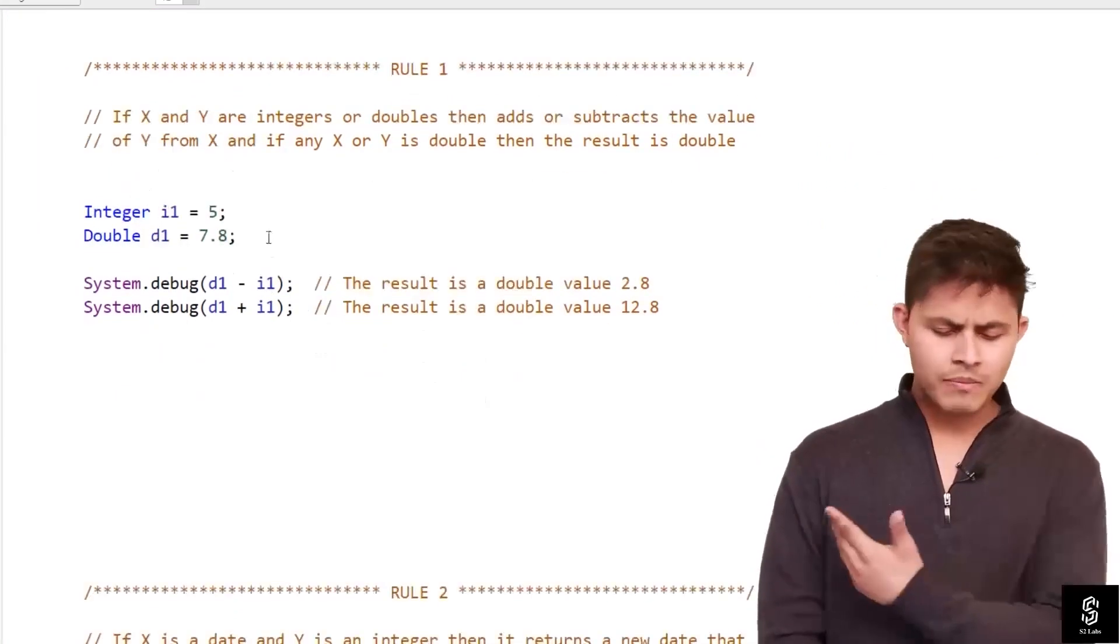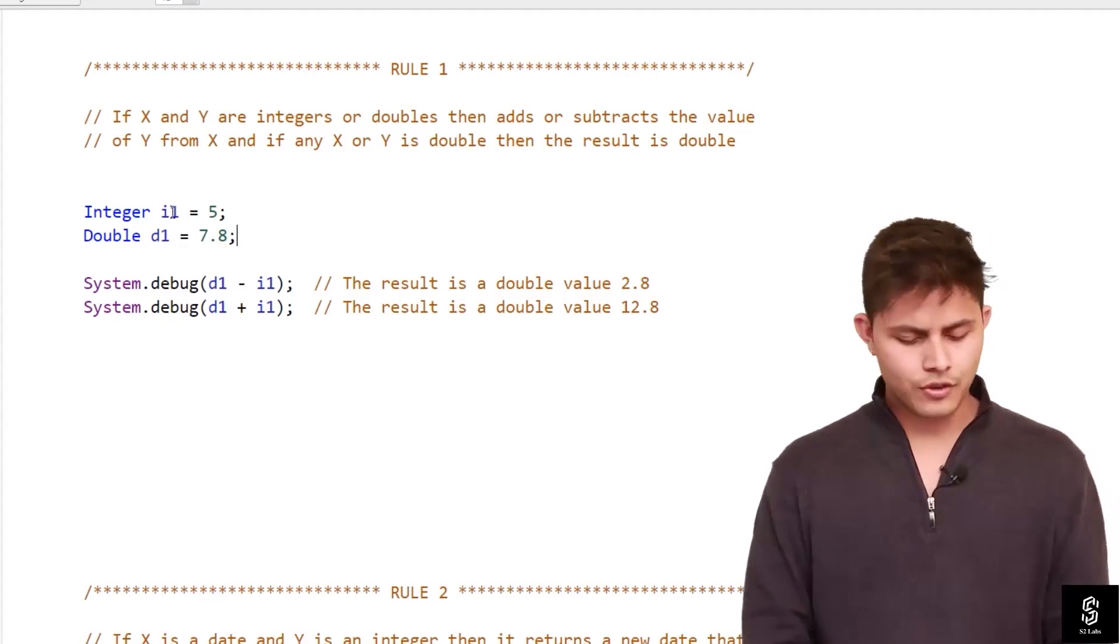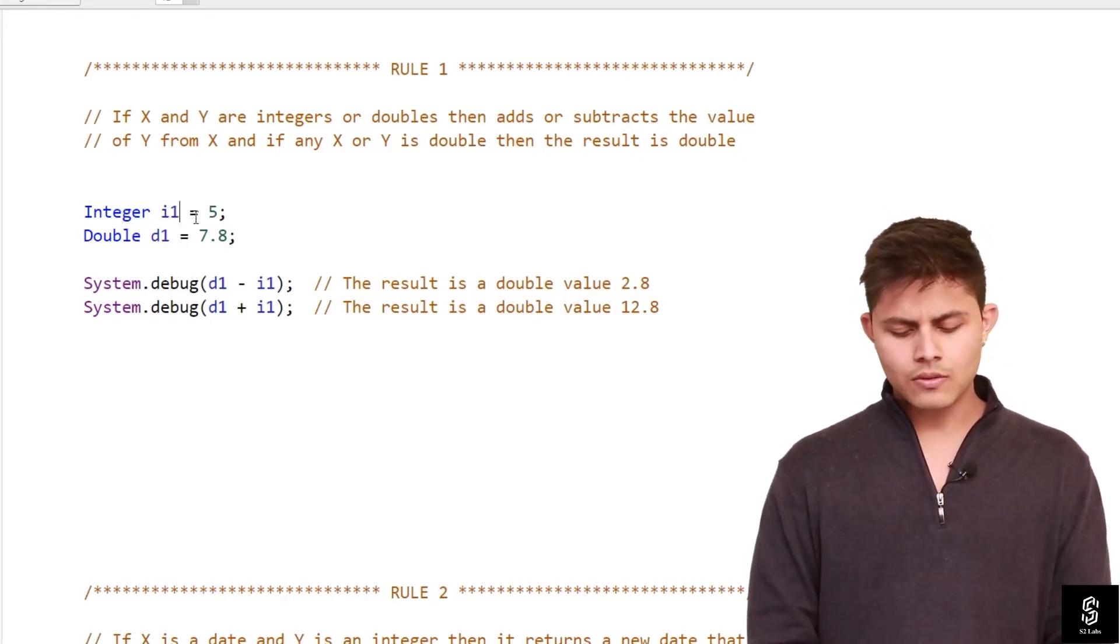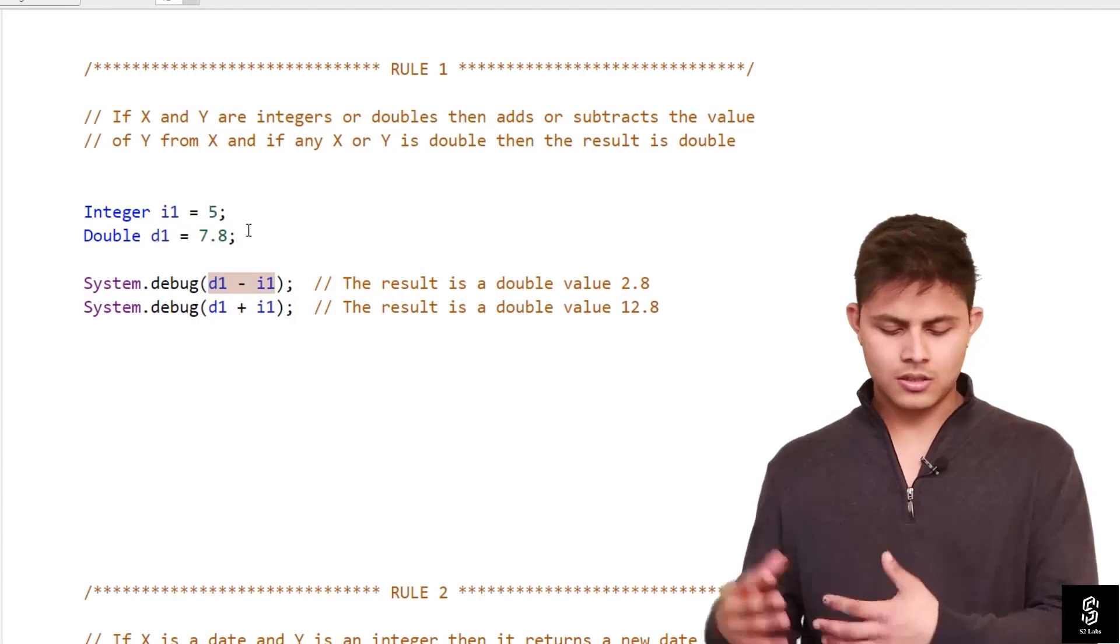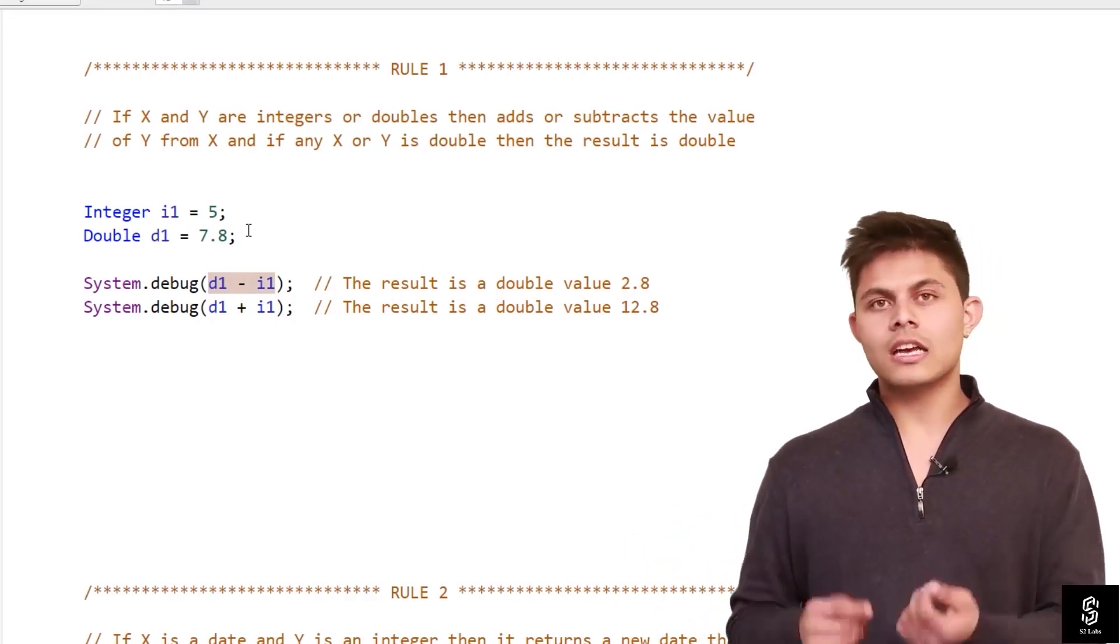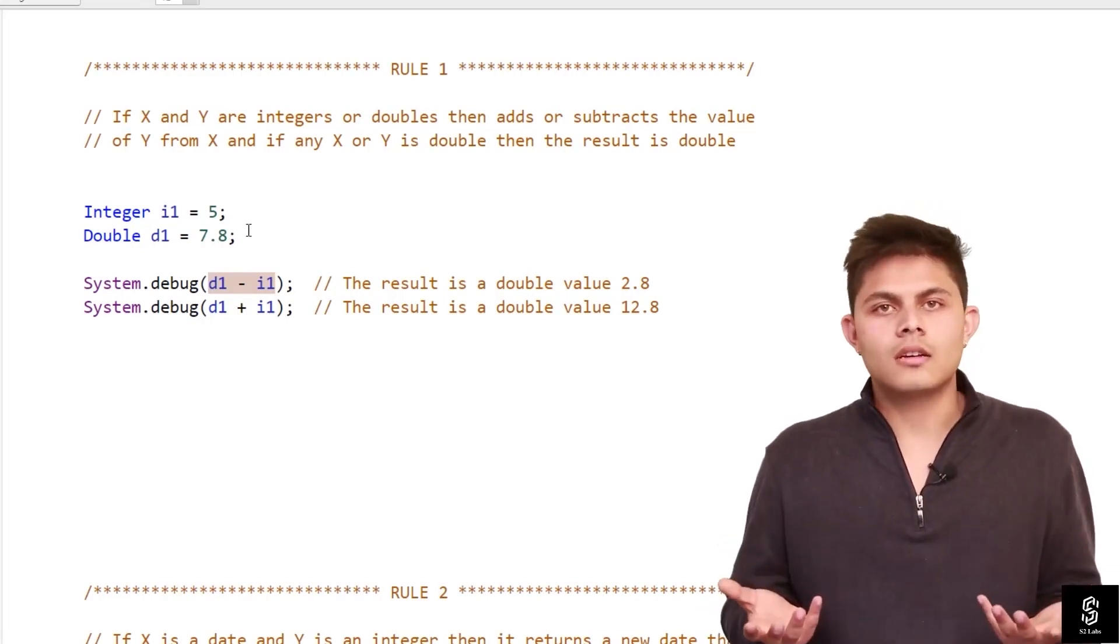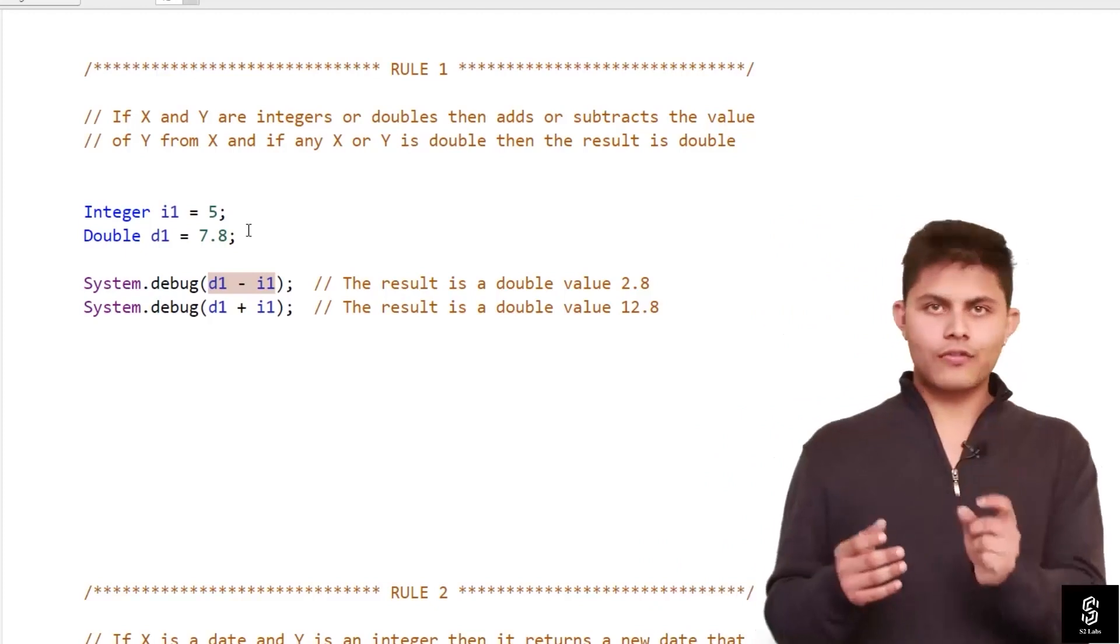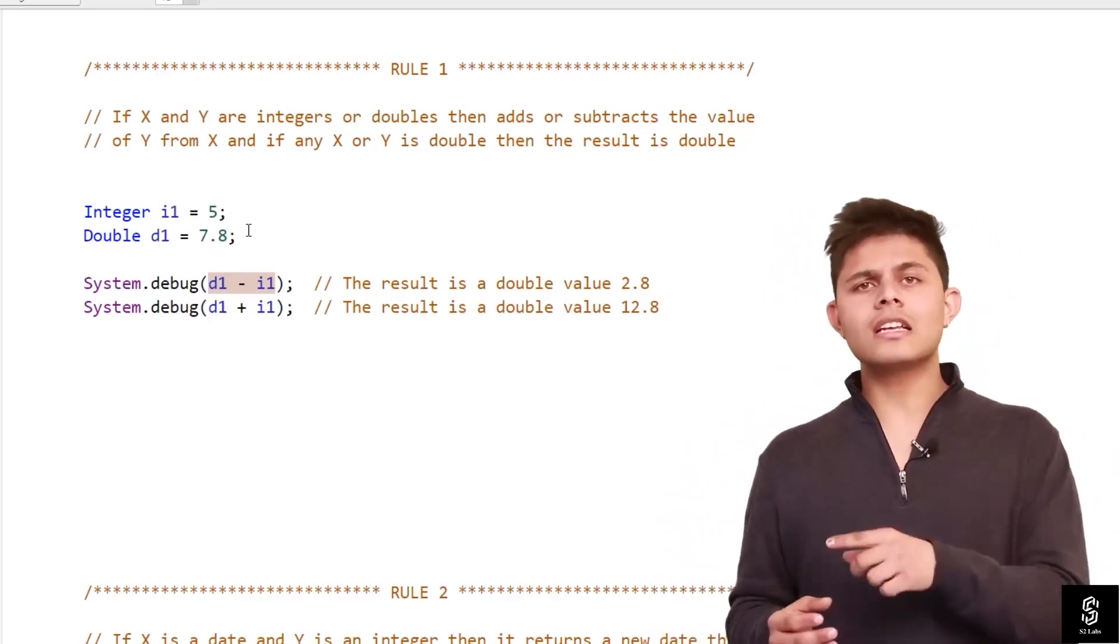Here I have a simple program which explains this first rule. I have integer I1 which equals 5 and double D1 which equals 7.8. When I'm going to subtract I1 from D1, then it will return 2.8. And 2.8 is a double value, right? If it were returning integer, it would have returned 2.